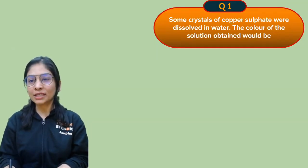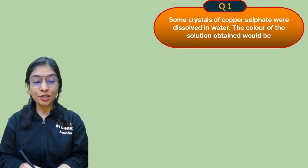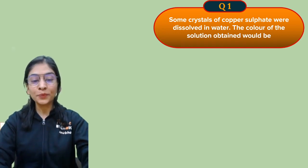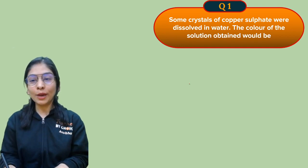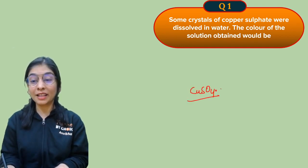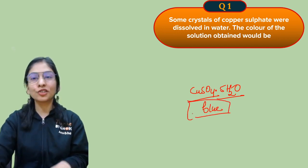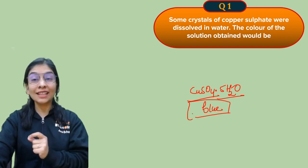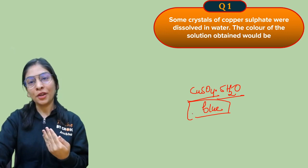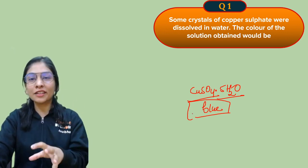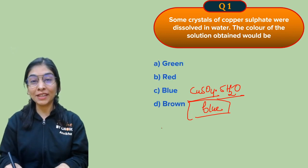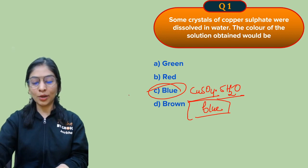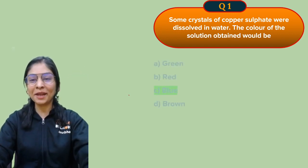Question number one: some crystals of copper sulfate were dissolved in water — what would be the color of the solution obtained? Copper sulfate crystals, due to water of crystallization, have a blue color. So whenever you dissolve copper sulfate in water, the color of the solution obtained would be blue.